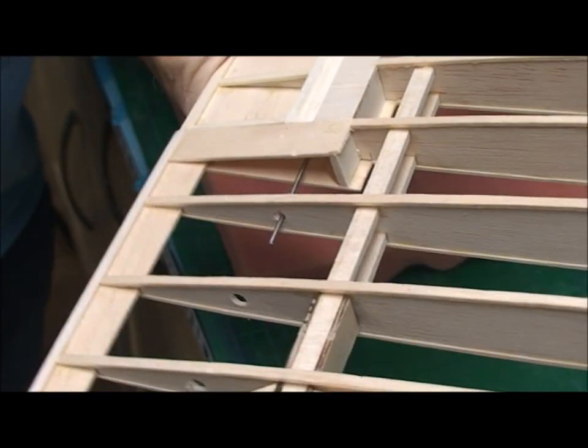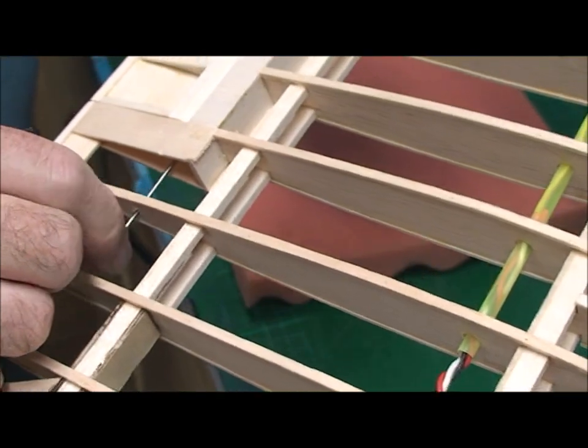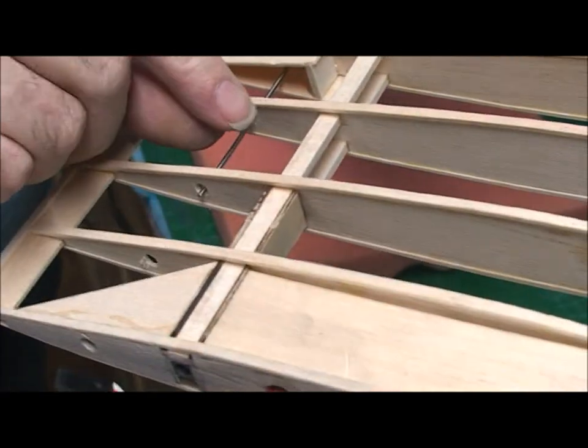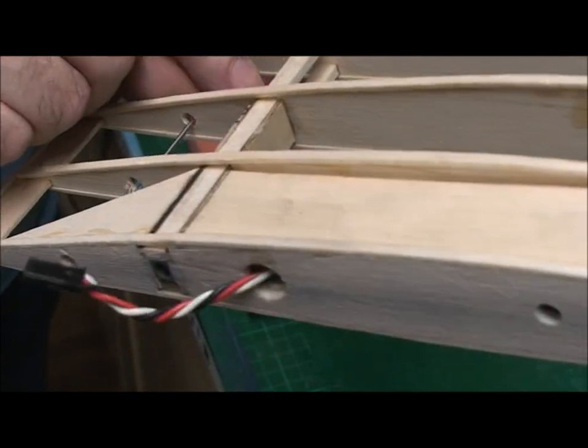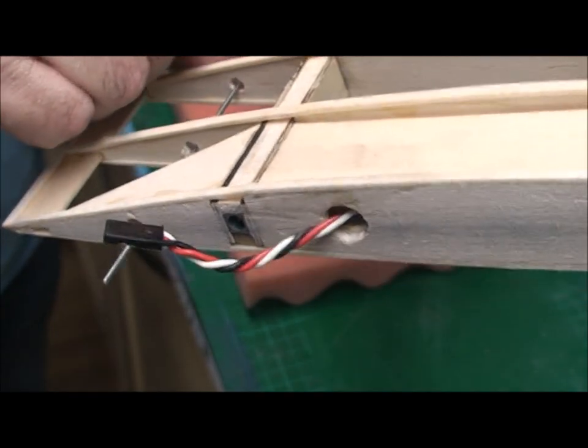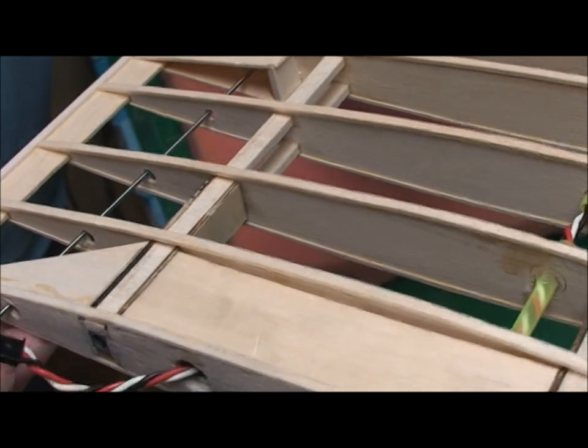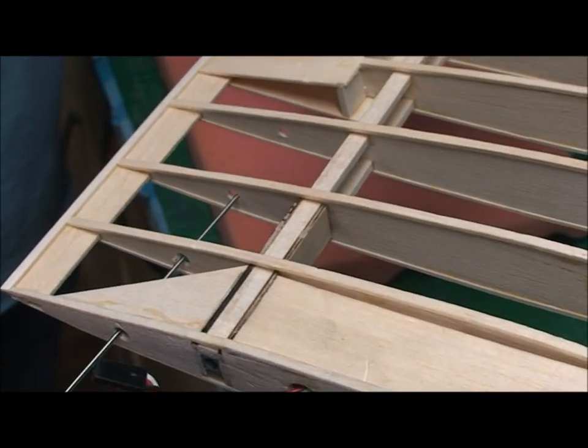And if we go to the other end I'll start sliding that out. You can see I've got holes in the ribs to allow the piano wire to exit. So again, I'll just slide that out. In this case, I am going to take it right out.